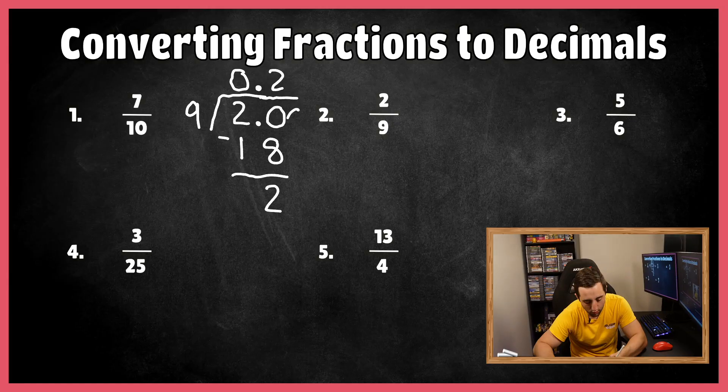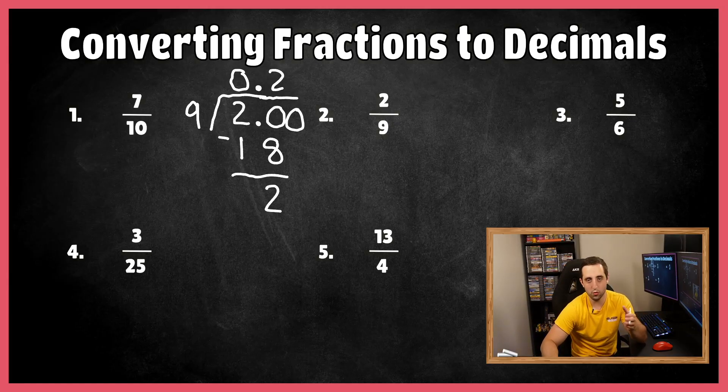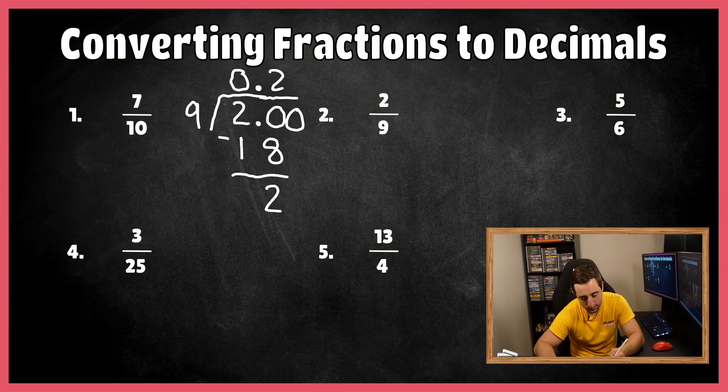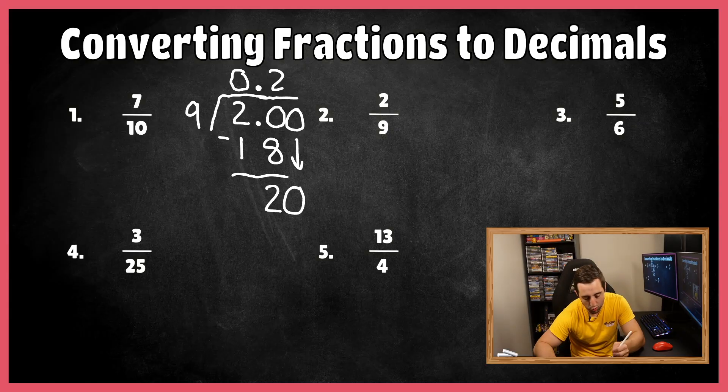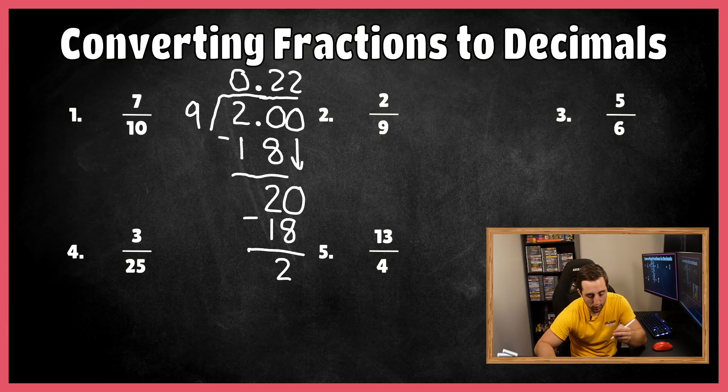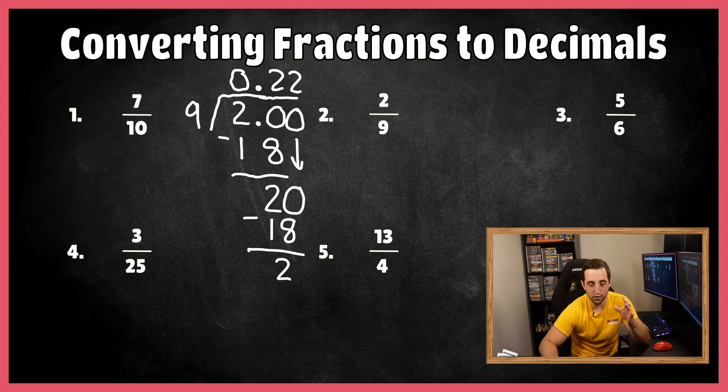Well, how many times does nine go into the number two? It doesn't. So that's where we annex a zero and add it to the very end because two, 2.0, 2.00, you could add as many zeros as you want and it's still going to be the number two, which is why we can just keep annexing zeros literally forever and ever if we wanted to. So let's bring that zero down. How many times does nine fit into the number 20, which we literally just answered this question. It's still two.